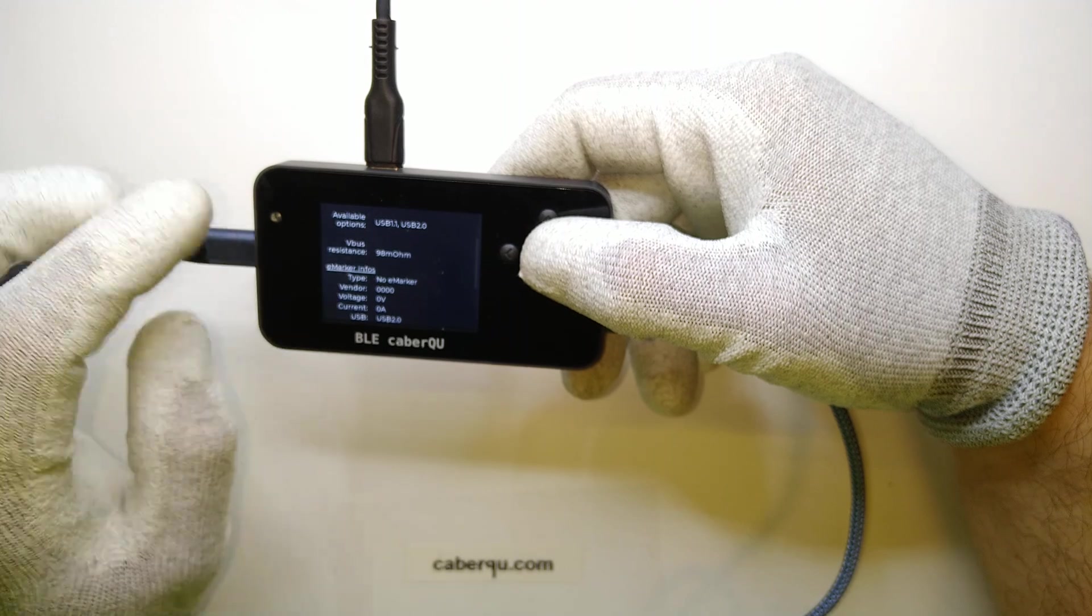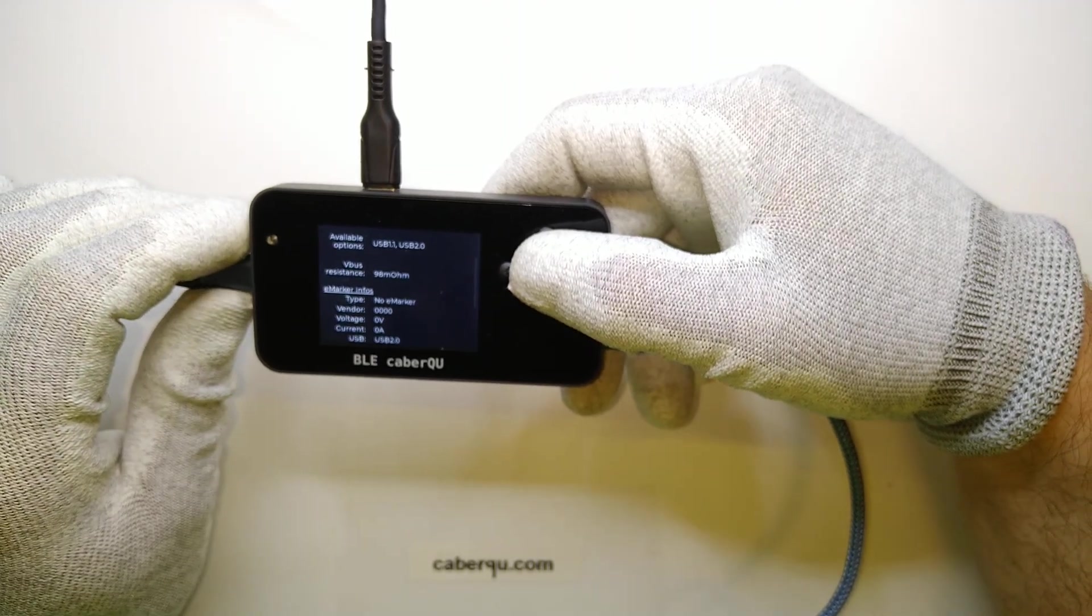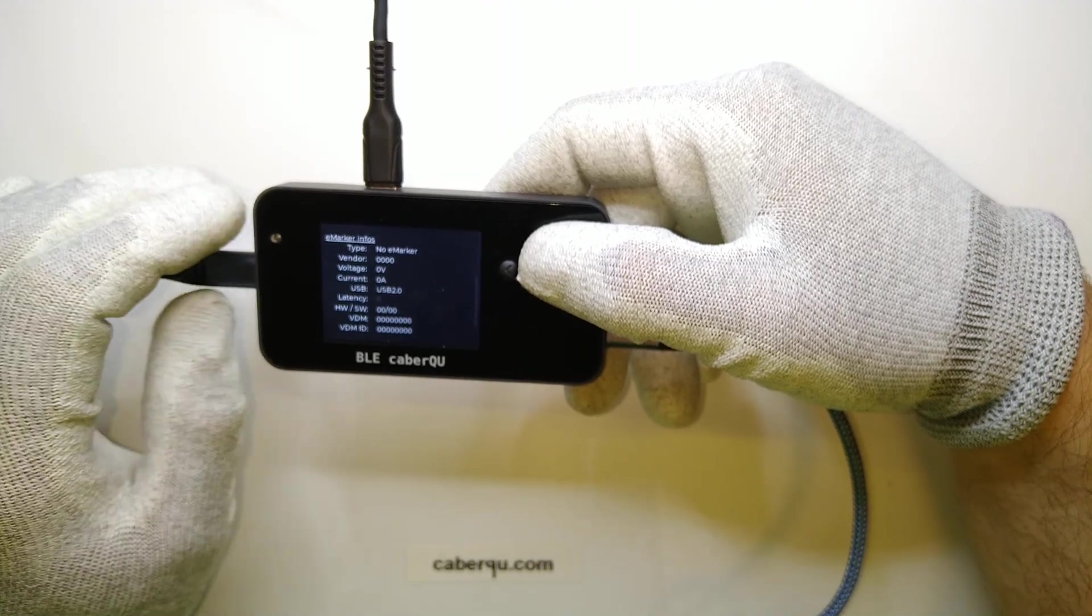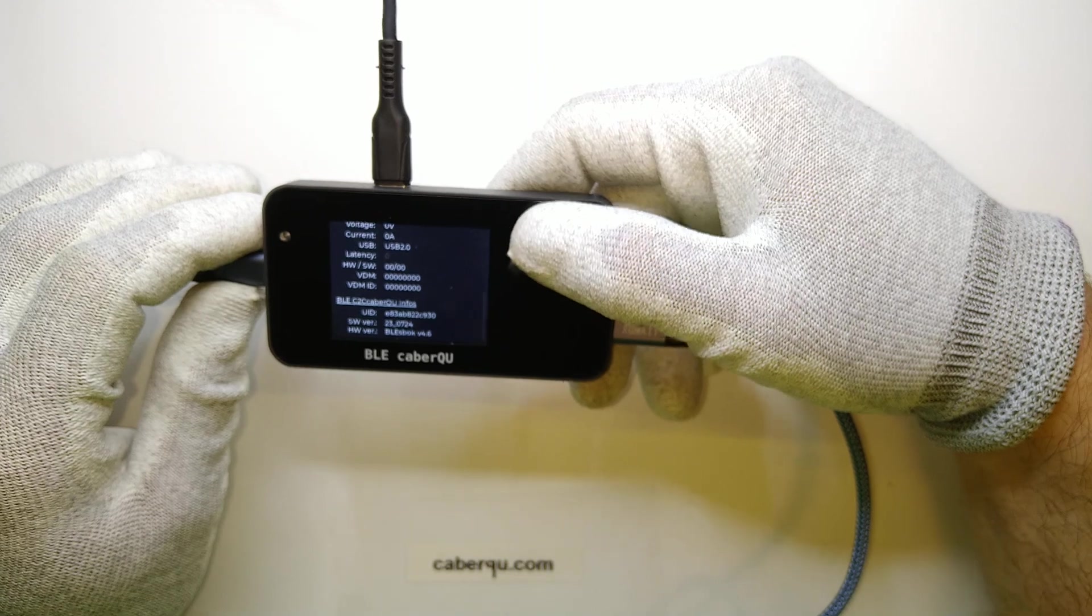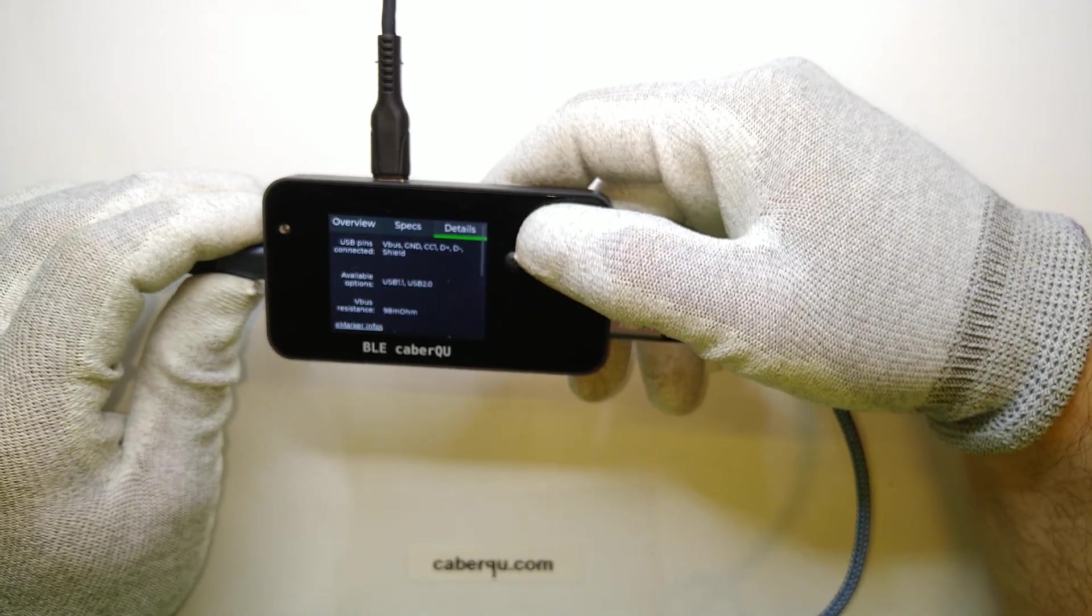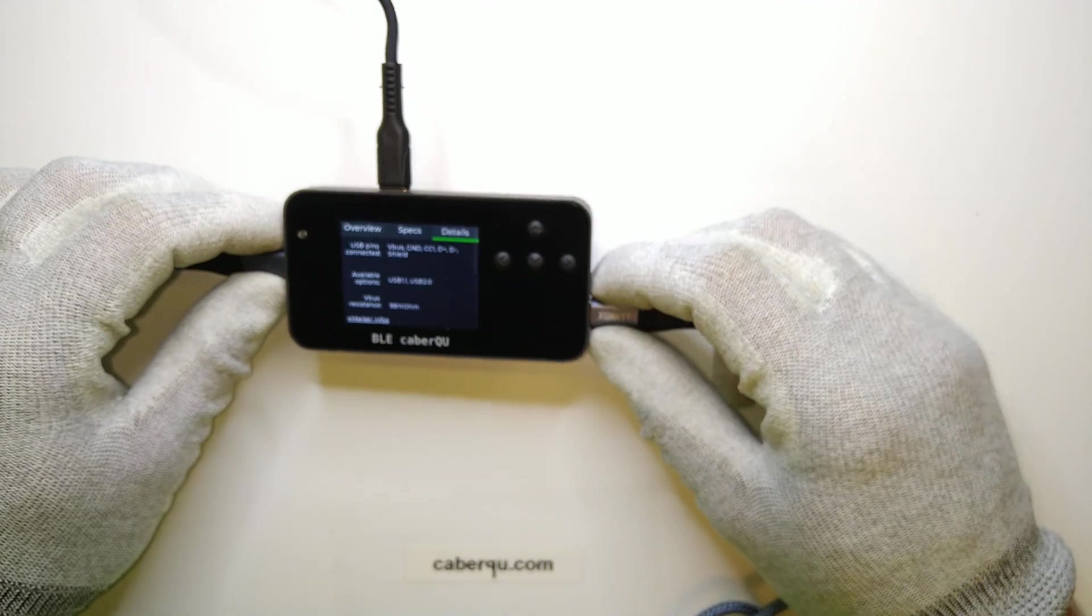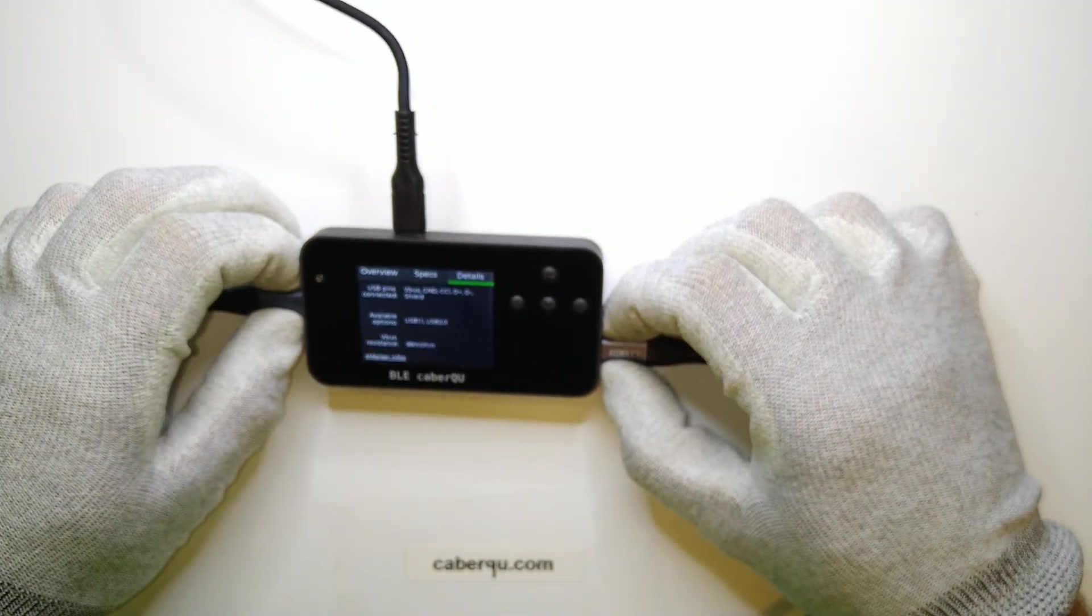The VBUS resistance is at 98 milliohms, which is quite high to be honest, especially for a new cable where the connector is still quite unused and not scratched in any way. There is no e-marker inside, like we just said. The cable itself is okay, I would say, especially for the price point of €1.70. You cannot expect too much, but it would charge your phone in the end, so that's fine.